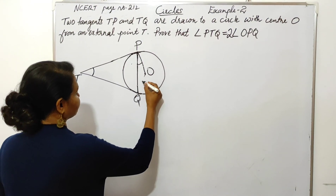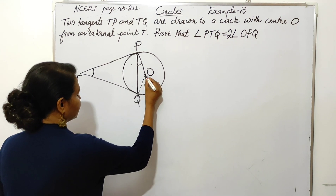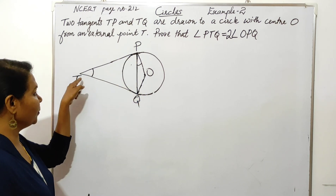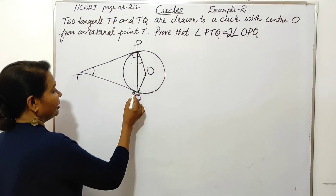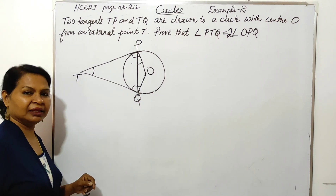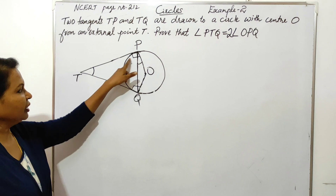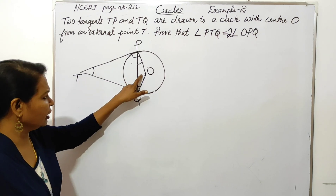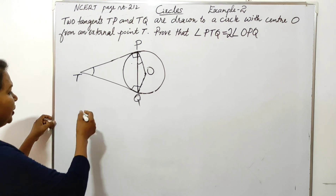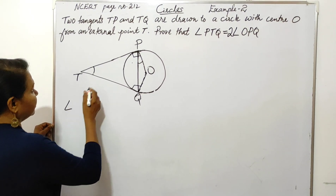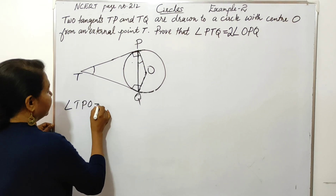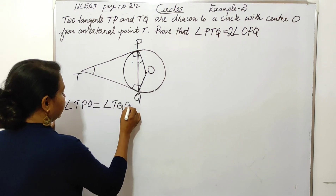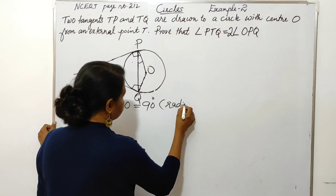I am going to join OQ. In quadrilateral TQOP, this angle is 90 degrees, and this one is 90 degrees. Reason: radius is perpendicular to tangent. Then, if you have 4 angles summing to 360 degrees, the remaining two angles sum to 180 degrees. The statement is: angle TPO and angle TQO are each equal to 90 degrees, because radius is perpendicular to tangent.